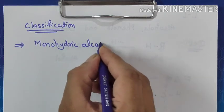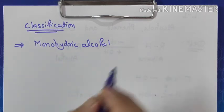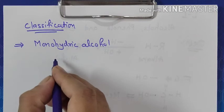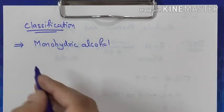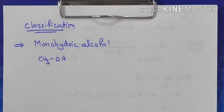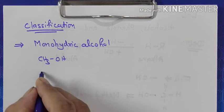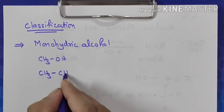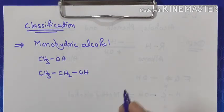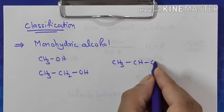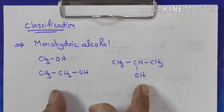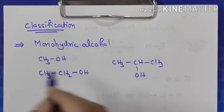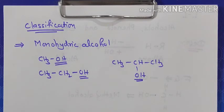What is monohydric alcohol? Monohydric alcohol is when only one OH is present in a compound. Example: CH3OH — only one OH is present, this is monohydric alcohol. CH3CH2OH is also monohydric alcohol. CH3CHCH3OH is also monohydric alcohol. It is called monohydric alcohol because in this compound only one OH group is present.